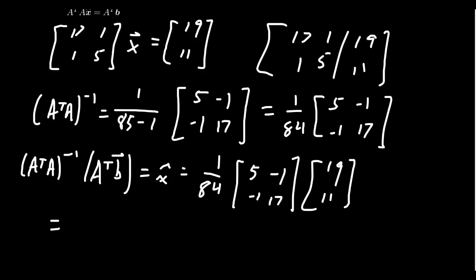So if we multiply that thing through using usual matrix multiplication, you're going to get 5 times 19, which gives you 95. And you have to subtract 11 from that, which is going to give you 84. Don't forget the scalar. Oh, 84 and 84. That's kind of convenient. We also have to take negative 1 times 19. And then you'll subtract that from 17 times 11. 17 times 11 is 187. So if we subtract from 187, 19, we end up with 168, which is just 84 times 2. So the least squares solution we get is 1 and 2.